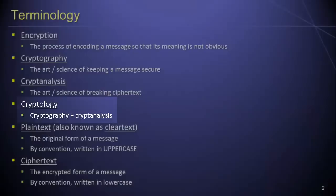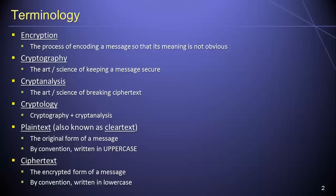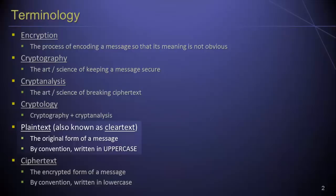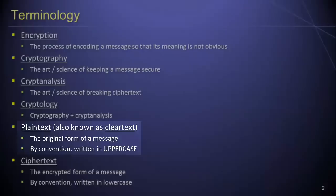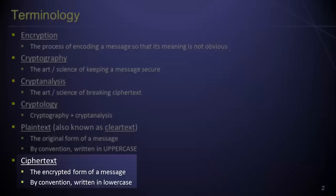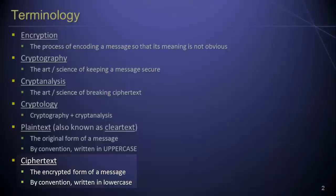Since encryption involves encoding a message such that its meaning is not obvious, we need a convenient way of talking about the different forms in which a message might appear. For this purpose, we have the terms plaintext and ciphertext. Plaintext, which is also known as clear text, refers to the original unencrypted form of a message. By convention, plaintext is typically written in uppercase to distinguish it from ciphertext. Ciphertext refers to the encrypted form of a message and is written in lowercase by convention.